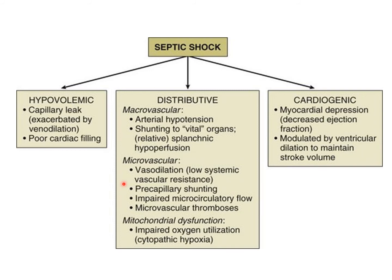Sepsis may further lead to microvascular thrombosis and eventually cell injury following mitochondrial dysfunction, lack of oxygen utilization, shift to anaerobic respiration, and metabolic acidosis. Moreover, it may lead to cardiogenic shock due to myocardial depression and ventricular dilatation in an attempt to maintain stroke volume. A number of circulatory and cardiovascular changes can therefore contribute to a fatal outcome following sepsis.